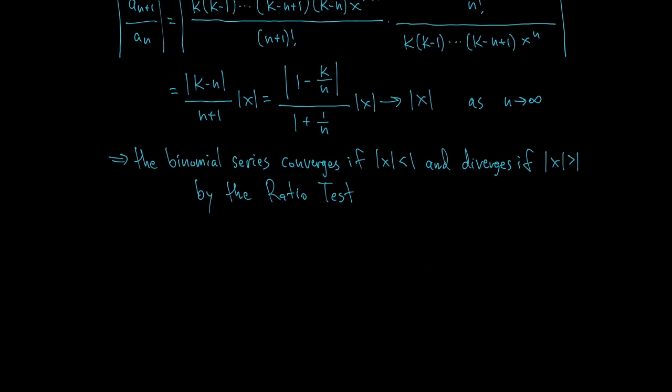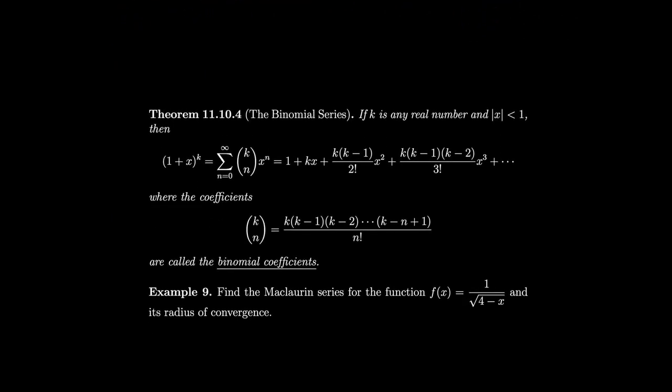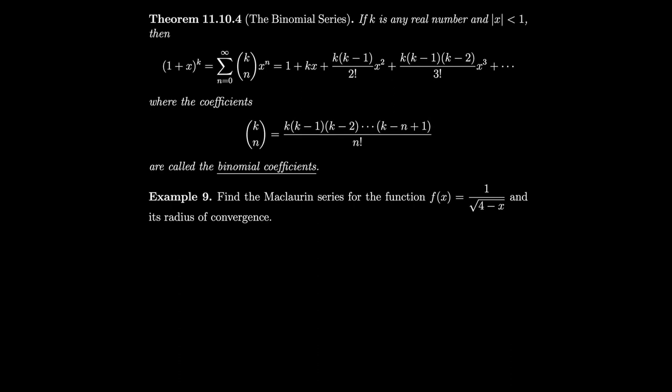Note that even after all this work we only found the McLaurin series for the binomial — we haven't proven it equals the function. Showing R_n → 0 is quite hard. Stewart's textbook outlines an alternative technique for this, but we won't go through it here.